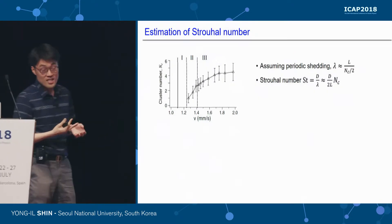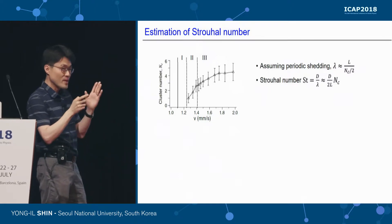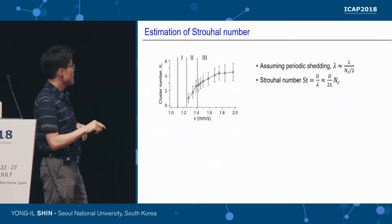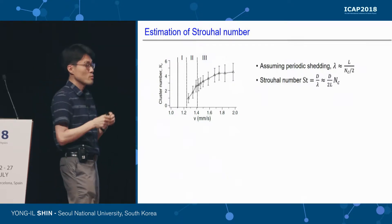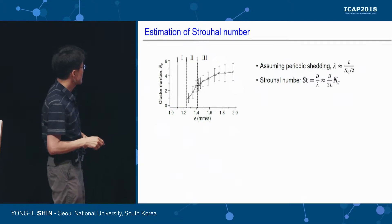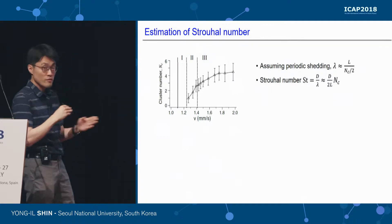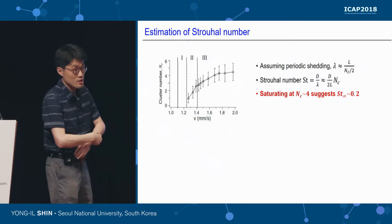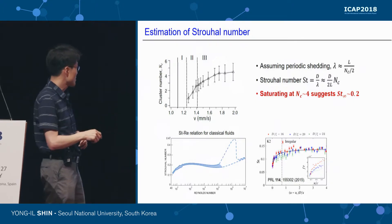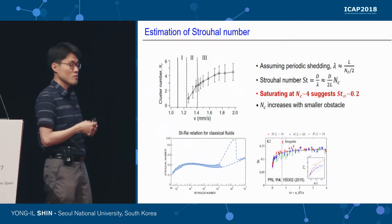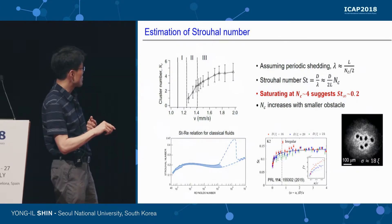This is quite consistent with what numerical simulations predicted. We also studied the Strouhal number in our system. Assuming periodic vortex shedding, we estimate the vortex spacing as L over N_C, where L is the sweep distance and N_C is the vortex cluster number. The Strouhal number is linearly proportional to the vortex cluster number. In our data, the cluster number saturates at four as we increase moving velocity, which corresponds to a Strouhal number of 0.2 — very close to the classical value and consistent with numerical simulation. Using a smaller obstacle, we obtained more vortex clusters, consistent with the Strouhal number expression.